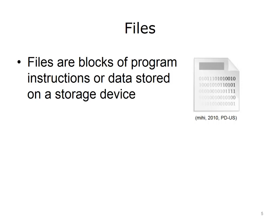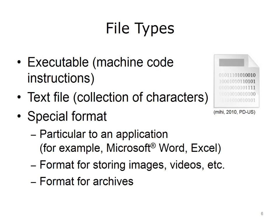A file is defined as a block of program instructions or data stored on some storage device. There are many different file types. One example is executable files, which contain a software application that users run. An executable file is filled with a series of machine code instructions. Another file type is a text file, which is merely a collection of binary representations of characters. There are other types of files that may include other types of special formatting, such as types specific to an application, like Microsoft Word or Excel.